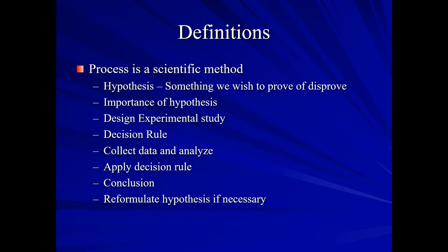Now, our process is a scientific method. The first thing we need to look at, we need to form our hypothesis. This is something we'd like to be able to prove or disprove. We need to determine the importance of our hypothesis. We need to design our experimental study. We need to come up with a decision rule for this experimental study. Then we can go out and collect our data and analyze. Once we've done this, we can apply our decision rule and we make our conclusion based on that decision rule. Sometimes it's necessary that we reformulate our hypothesis and start all over again.